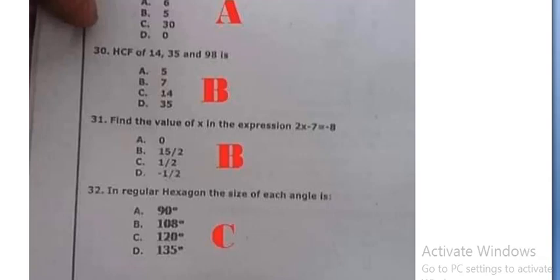Find the value of x in the expression 2x minus 7 is equal to minus 8: 15 by 2, option B. A regular hexagon, the size of each angle is 120, option C.